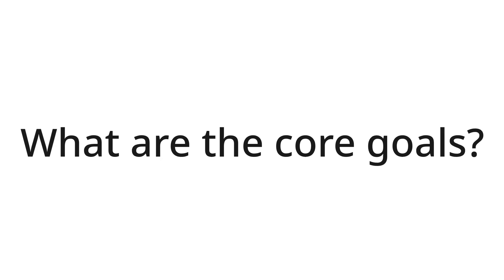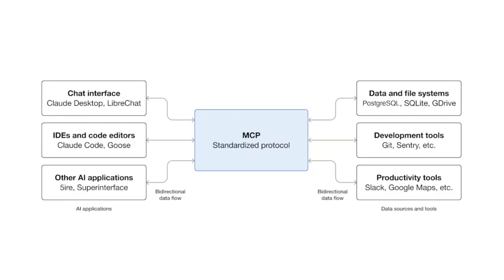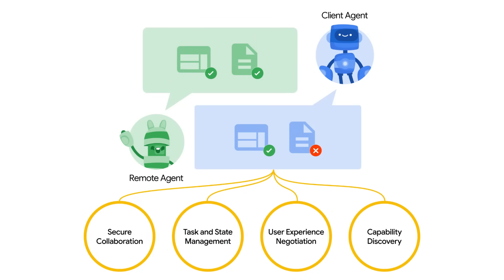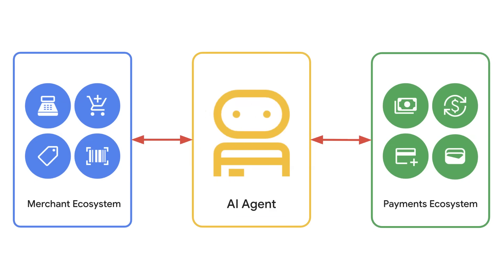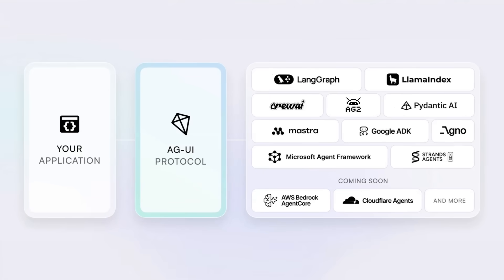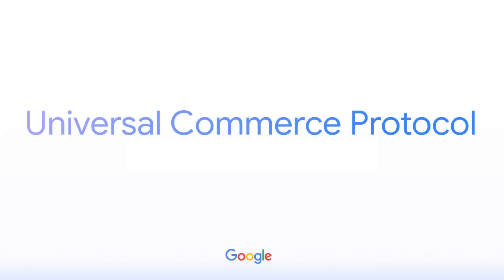So what are the core goals of this new protocol? If we think back: MCP is kind of the tools protocol, which allows agents to basically access tools. Then we've got A2A, which came from Google — a message passing system for having multiple agents interact with each other. Late last year we had AP2, a protocol built around payments, and in many ways that's gone quiet. And we've had AGUI, a protocol for developing dynamic UIs on the fly.